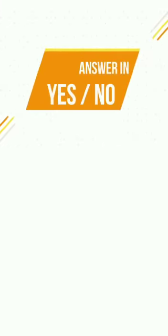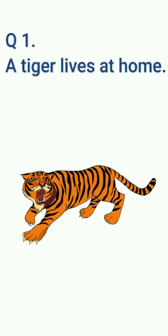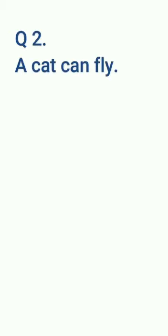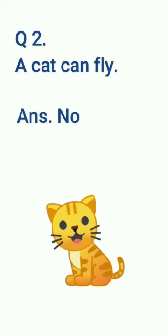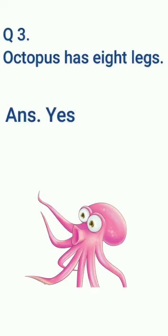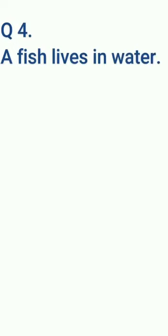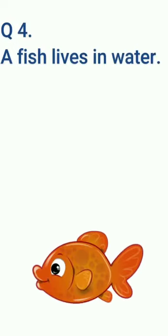Now move to answer in yes or no form. Question number one: does a tiger live at home? Answer: no, a tiger lives in the jungle. Question number two: can a cat fly? No. Question number three: does an octopus have eight legs? Question number four: does a fish live in water? Yes, this is true.